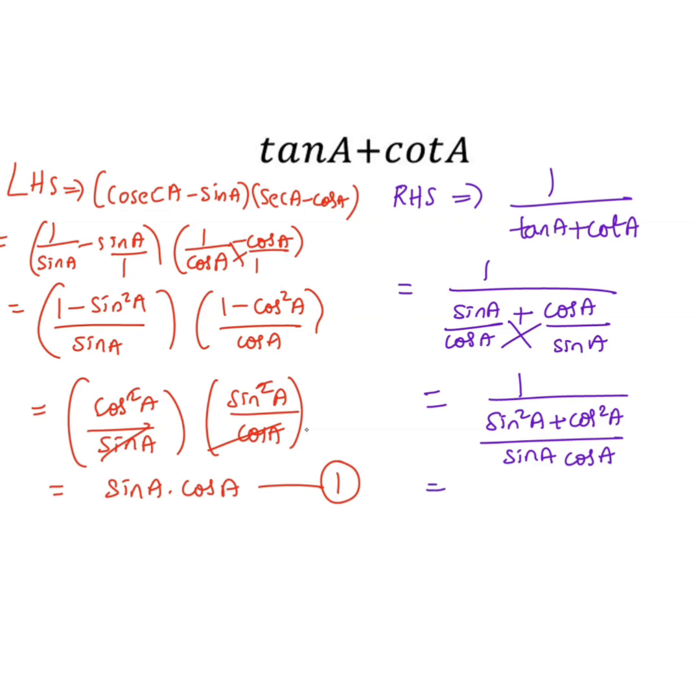Now this will become reciprocated, it becomes sin A cos A divided by sin square A plus cos square A is 1. Taking the reciprocal, it becomes 1. Therefore, this is equation 2.